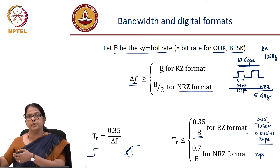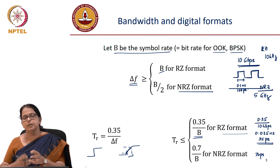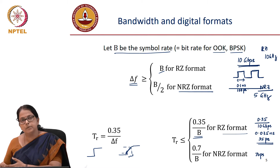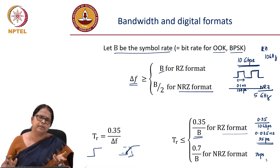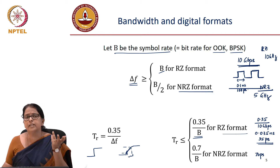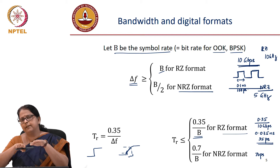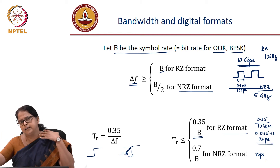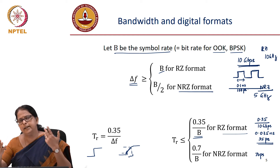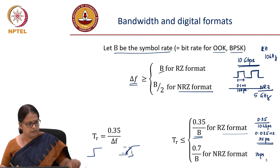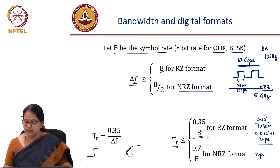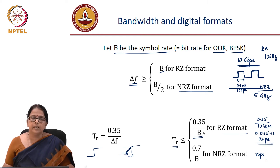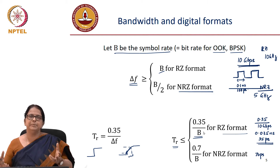There could be a trans-impedance amplifier in the receiver which could also impose bandwidth limitation. So there are certain constraints for the receiver. Fiber does introduce a rise time constraint because of dispersion — different wavelengths will start walking off, and the pulse will start getting delayed and shaped in the time domain. So transmitter, receiver, and fiber all contribute towards rise time. The tr that we write as 0.35 divided by B is actually the effective rise time of the transmitter, fiber, and receiver.